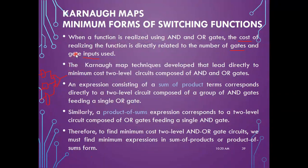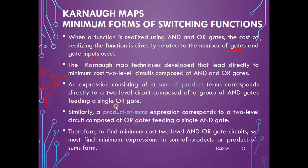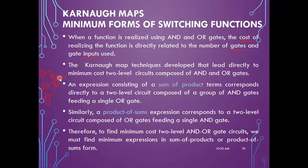We need to reduce the cost, so we go for K-maps. K-map techniques lead directly to minimum cost two-level circuits composed of AND and OR gates. An expression consisting of sum-of-product terms corresponds directly to a two-level circuit composed of a group of AND gates feeding a single OR gate.